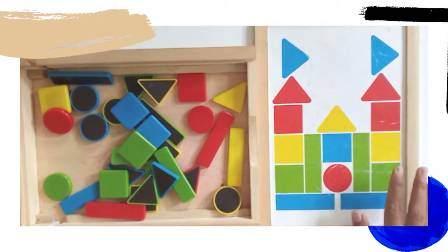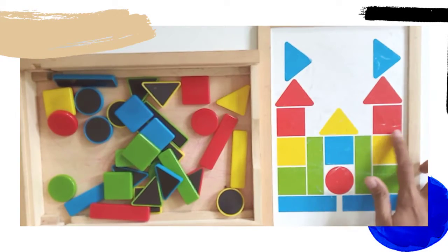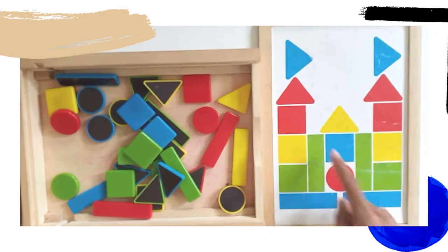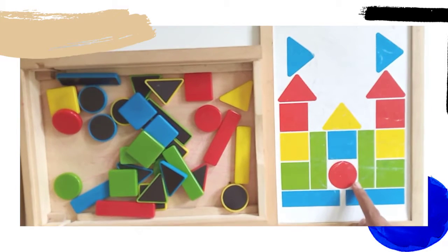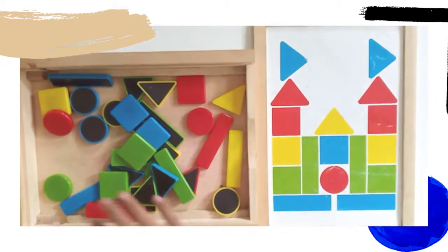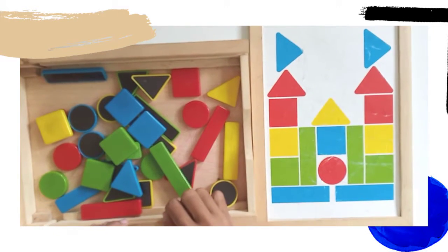I have this board full of shapes. There are square, rectangle, triangle, and one circle. Okay, now let's grab rectangle shapes. Which one is rectangle?